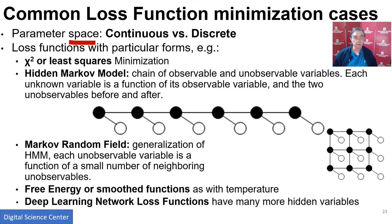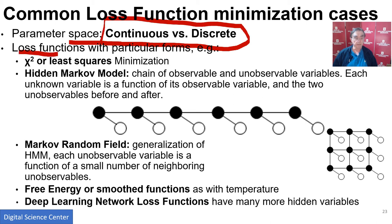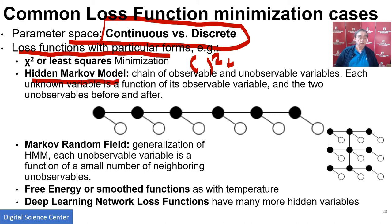When we look at loss functions, we continue with the continuous versus discrete distinction. Loss functions have particular forms. The most famous for me is chi-squared — the sum of squares, observation minus model all squared, summed over all observations. There is a hidden Markov model, which you could view as an early version of a neural net, which just has a few hidden variables corresponding to the observations. And then you have a Markov random field, which generalizes that, but it's still not as general as a deep learning loss function, which has lots of many layers of hidden layers and very complex connections.